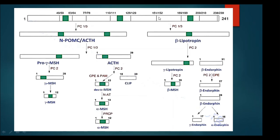The pre-pro hormone is initially processed and from it two major products can be produced: pro-opiomelanocortin (POMC) and the adrenocorticotropic hormone, along with the beta-lipotropin hormone. From POMC, cleavage produces pro-gamma MSH — where MSH is melanocyte stimulating hormone — and ACTH. ACTH can be converted into CLIP protein and alpha-MSH, while pro-gamma MSH forms the gamma-MSH peptide. Beta-lipotropin can be degraded to form gamma-lipotropin and beta-endorphin, and gamma-lipotropin gives rise to beta-MSH.